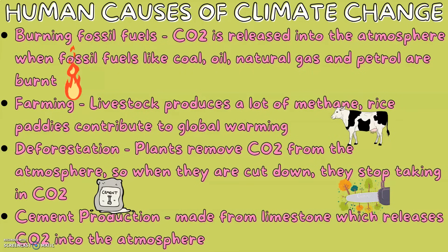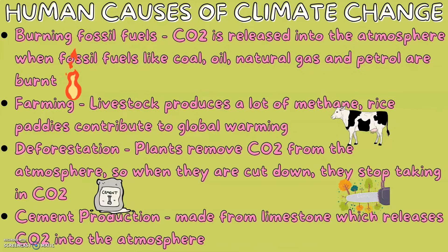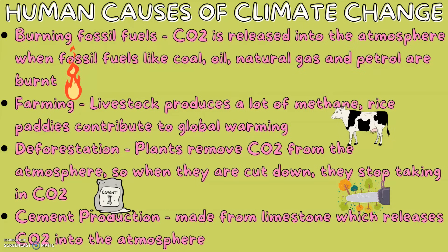Farming: livestock produce a lot of methane, and rice paddies also contribute to global warming. Deforestation: plants remove carbon dioxide from the atmosphere, so when they are cut down, they stop taking in carbon dioxide. Cement production is made from limestone, which releases carbon dioxide into the atmosphere.